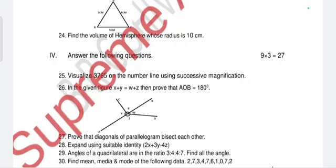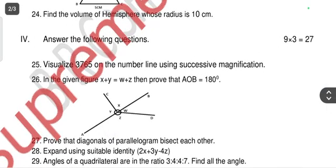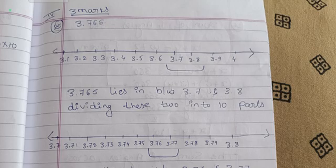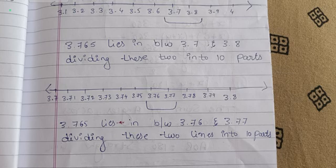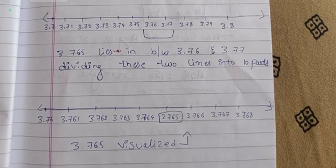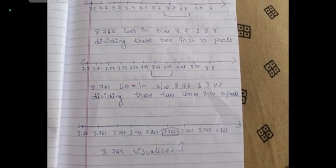Question 25: visualize 3.765 on the number line using successive magnification. First, locate 3.765 between 3.7 and 3.8 on a number line divided from 3 to 4. Then divide the interval 3.7 to 3.8 into 10 parts: 3.71, 3.72, … 3.80. Now 3.765 lies between 3.76 and 3.77. Divide again: 3.761, 3.762, 3.763, 3.764, 3.765. Mark 3.765 on this number line. This question carries three marks.